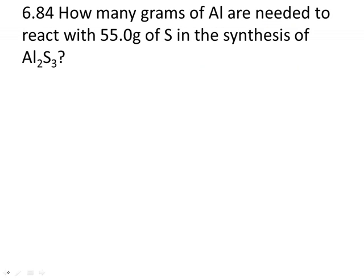Last one: how many grams of aluminum are needed to react with 55.0 grams of sulfur in the synthesis of Al2S3? The textbook leaps ahead a bit here since synthesis reactions aren't covered until Chapter 9, but in a synthesis reaction you're combining things — so aluminum reacts with sulfur to make Al2S3. Then I balance: I need two aluminums and three sulfurs.